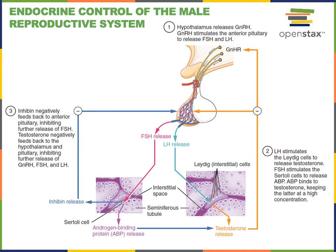Follicle-stimulating hormone binds to receptors on the surface of Sertoli cells — support cells in the testes that help support sperm production. One way Sertoli cells stimulate sperm production is by producing androgen-binding protein, which binds to testosterone and increases its local concentration within the testes. Sertoli cells also produce the hormone inhibin, which travels through the blood to the anterior pituitary and decreases FSH production. So inhibin is the primary negative feedback mechanism controlling FSH, whereas LH is primarily controlled by the negative feedback of testosterone.